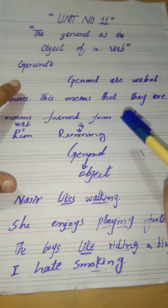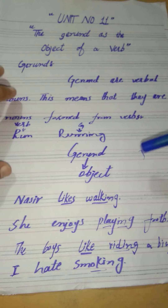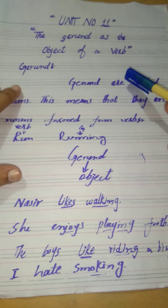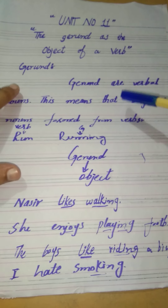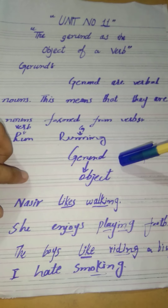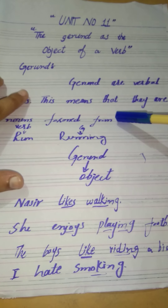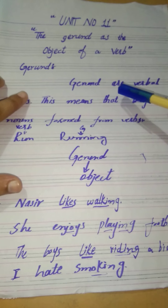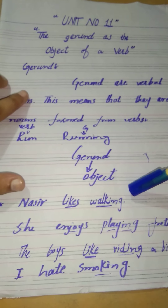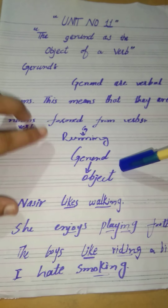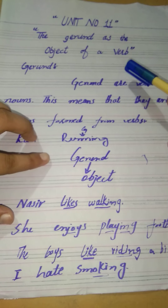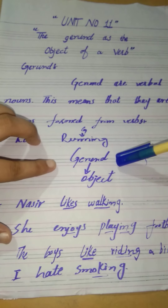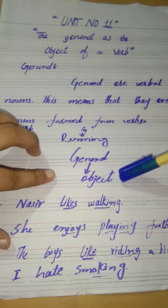We can use a gerund as a subject of a verb and also as an object of a verb. In the previous unit we studied gerund as the subject of a verb — gerund is used at the start of the sentence because the subject always comes at the start. Today we will study gerund as the object of a verb, where gerund is used at the end of the sentence.